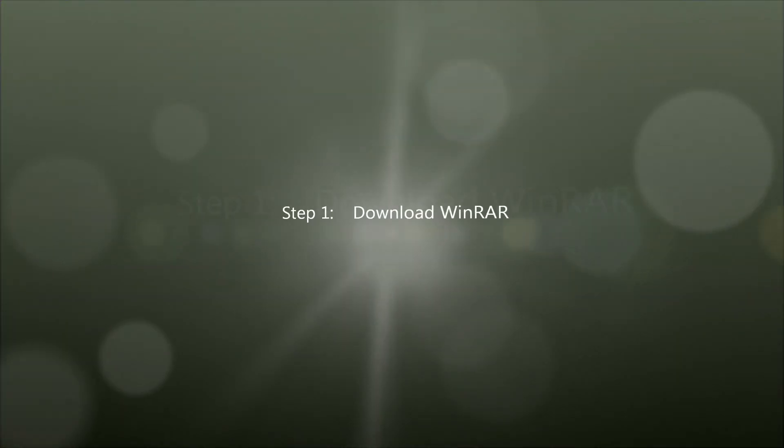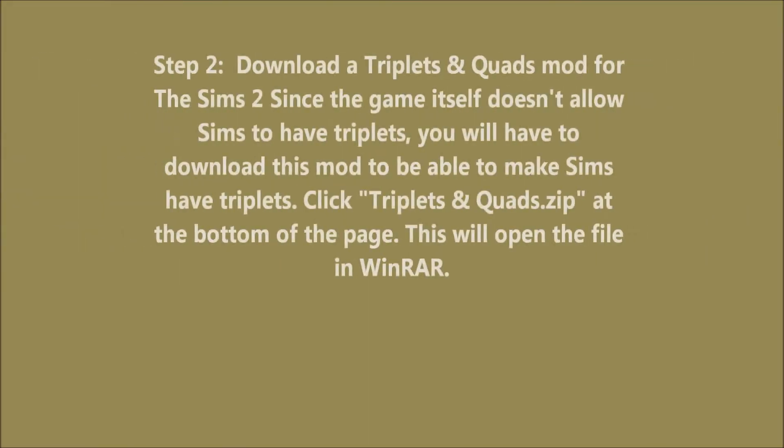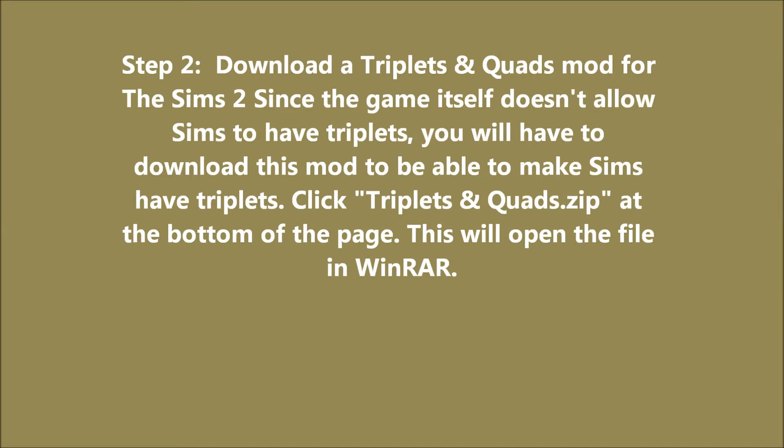Step 1: Download Renoir. Step 2: Download a triplets and quads mod for The Sims 2. Since the game itself doesn't allow Sims to have triplets, you will have to download this mod to be able to make Sims have triplets. Click tripletsandquads.zip at the bottom of the page. This will open the file in Renoir.